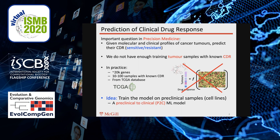However, in practice, the number of samples with known clinical drug response is quite small, even in large databases such as TCGA, making it impossible to train accurate machine learning models on clinical samples for the majority of drugs. This is an even bigger problem for newly approved drugs.